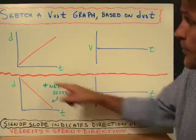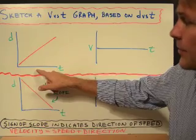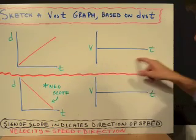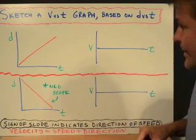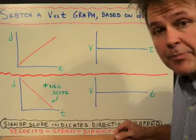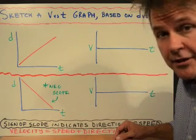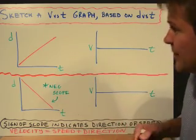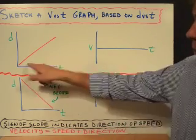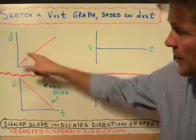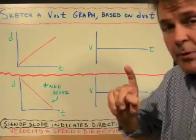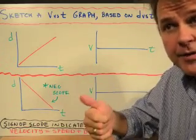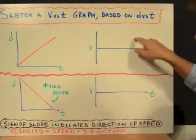In this first DT graph we see a straight line. I'd like you to pause and sketch the VT graph. Now that you're back, let's do this together. For a DT graph we're looking for a couple of things — we want to find out if the speed is changing or not. If it's a constant speed that would make it a flat line.